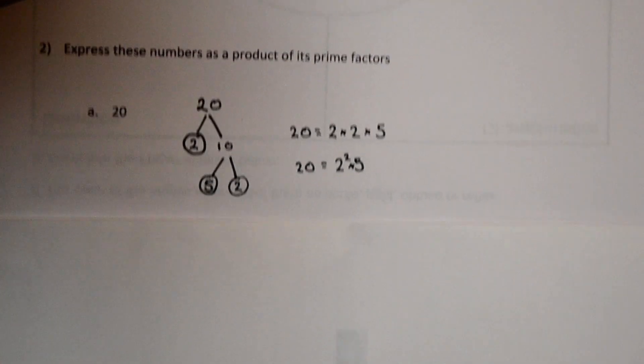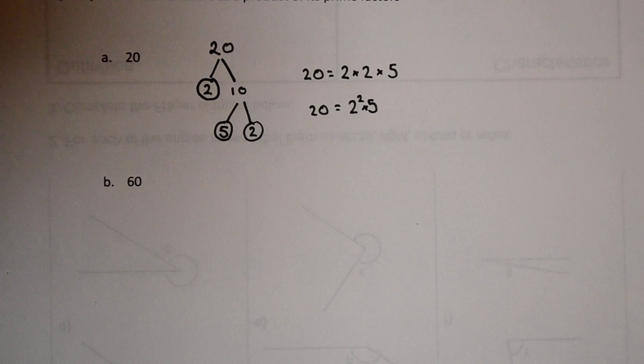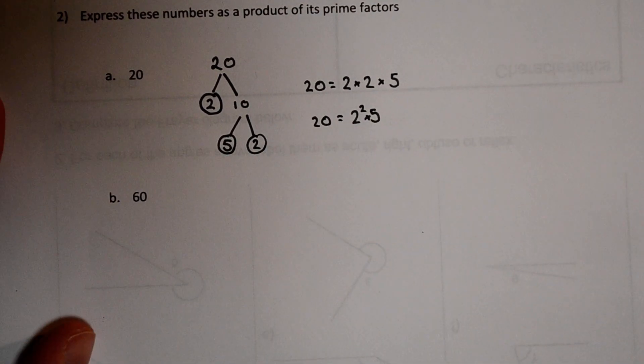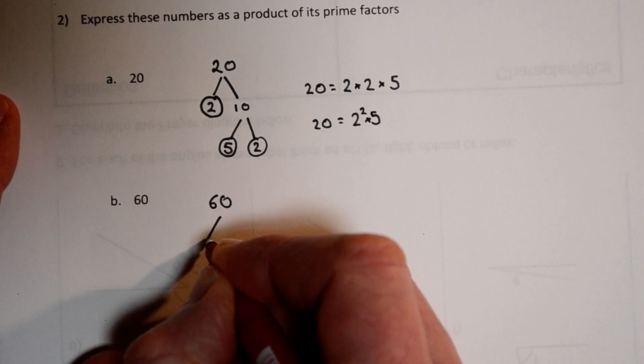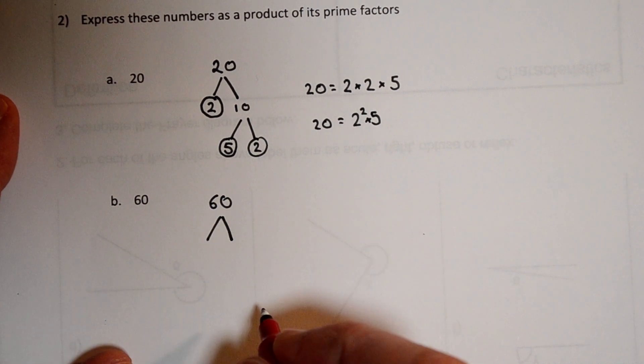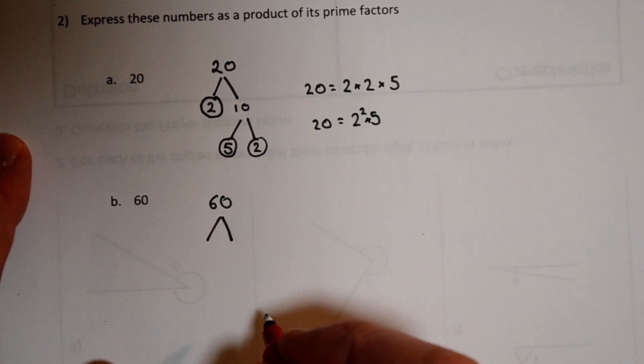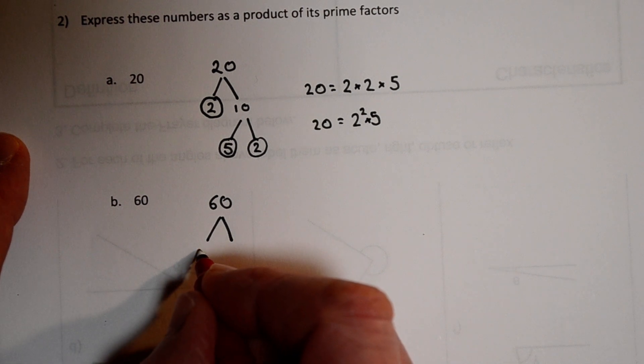Let's look at another one. 60. What's 60 as a product of its primes? Well first of all we start with 60. Any two factors. We could try 3 this time. 3 times 20.